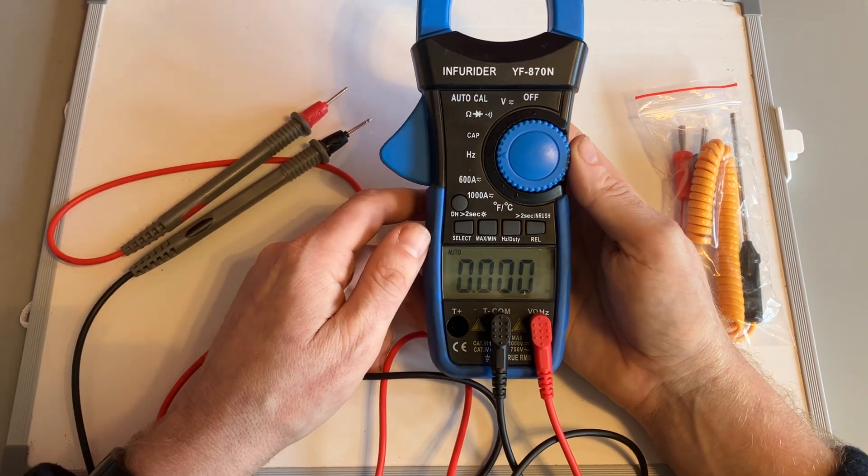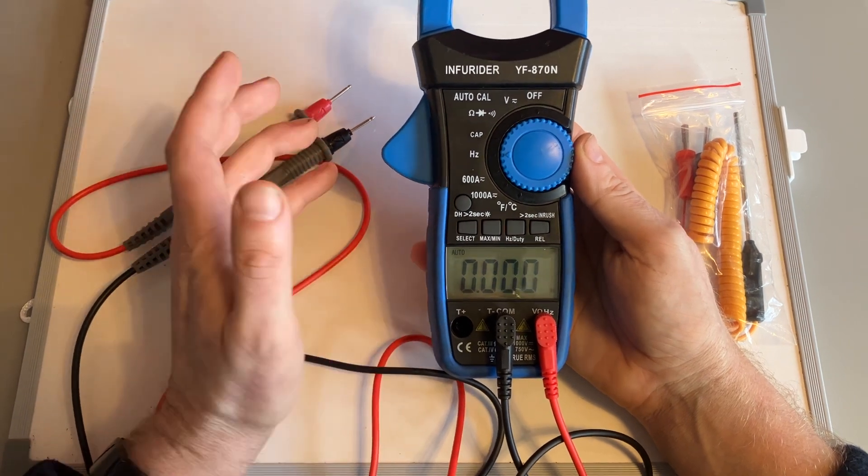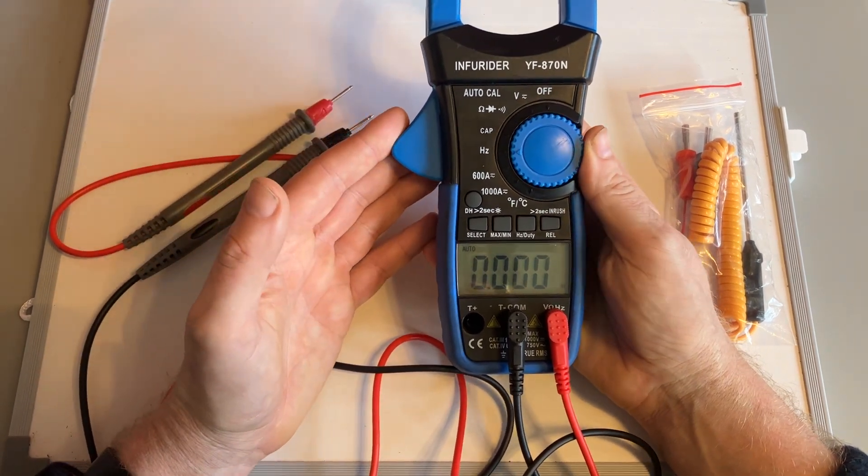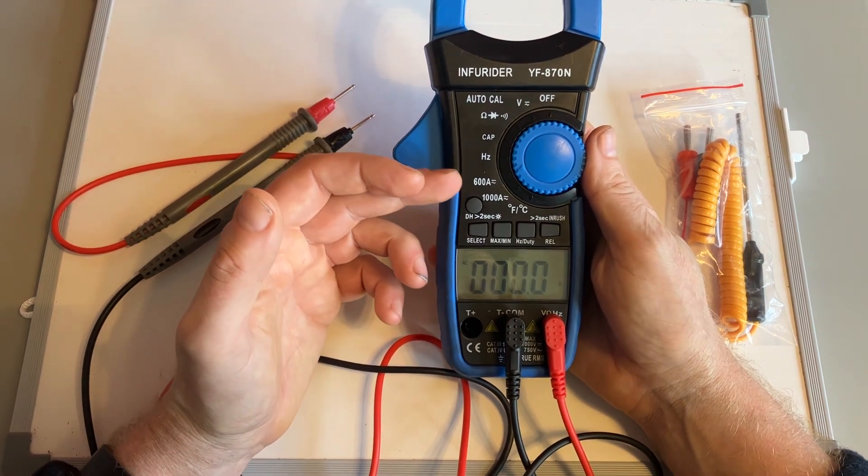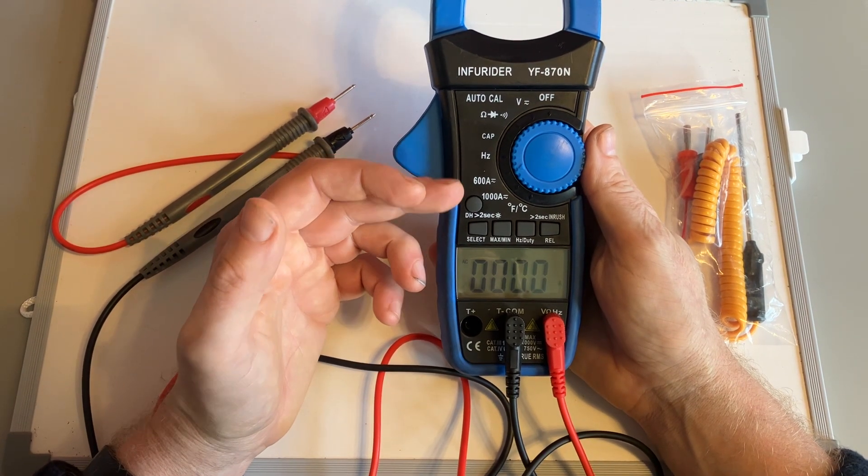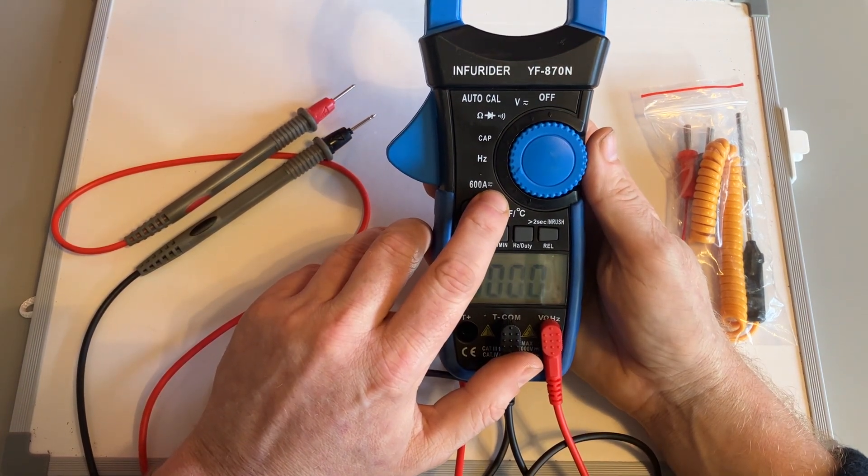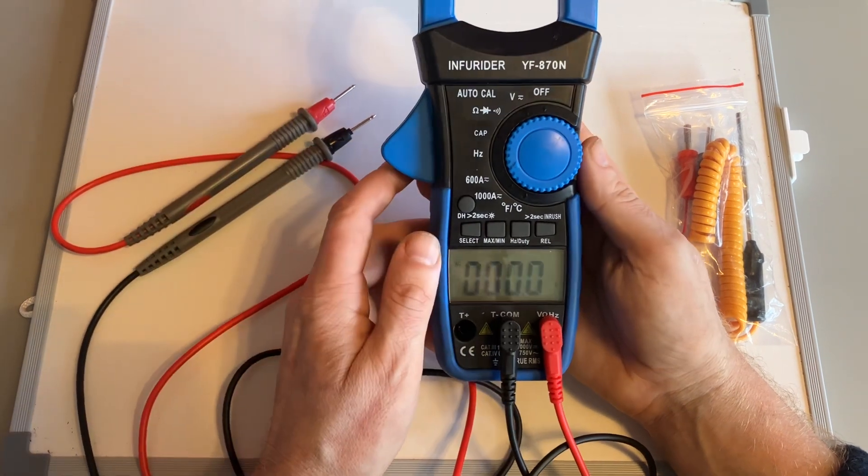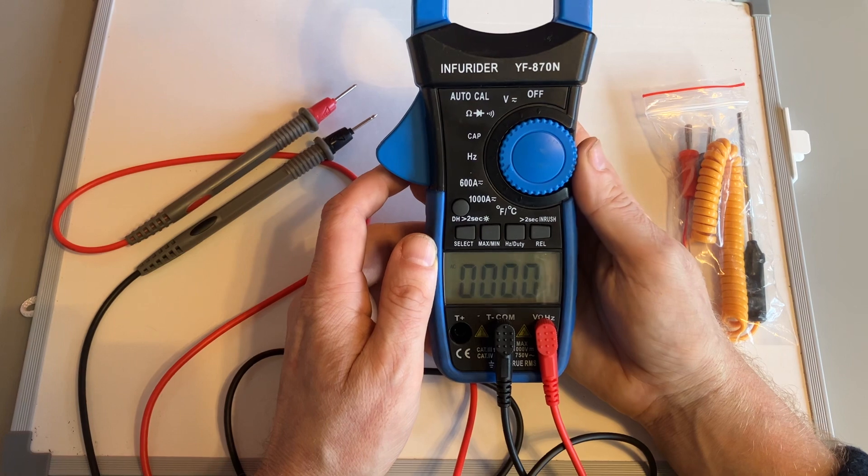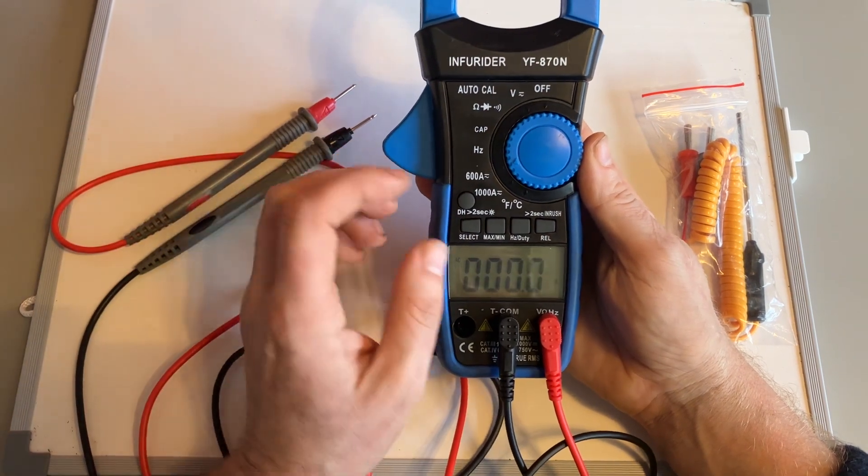So the main reason I use this as a mechanic is the next setting. It's ampage or current, two settings exactly the same, there's 600 rated up to and a thousand. Again there's a straight line there which tells me that it'll do DC and a wiggly line there that will tell me that it'll do AC. So as a mechanic again most of the things you're going to be working on is DC apart from some circuits that are active sensors that are active.